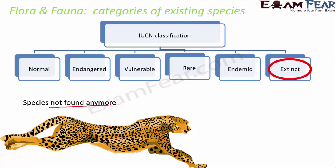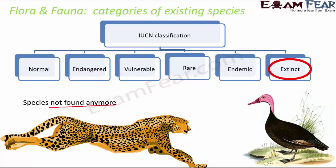When the Cheetah was declared extinct in India in 1952, it may still have been found in Africa or other countries, so 'extinct' can refer to a local area, a country, or the entire Earth. Another example of an extinct species is the pink-headed duck. With all six categories covered, this classification helps us know which species is in which category and what action we need to take to protect that particular plant or animal species.